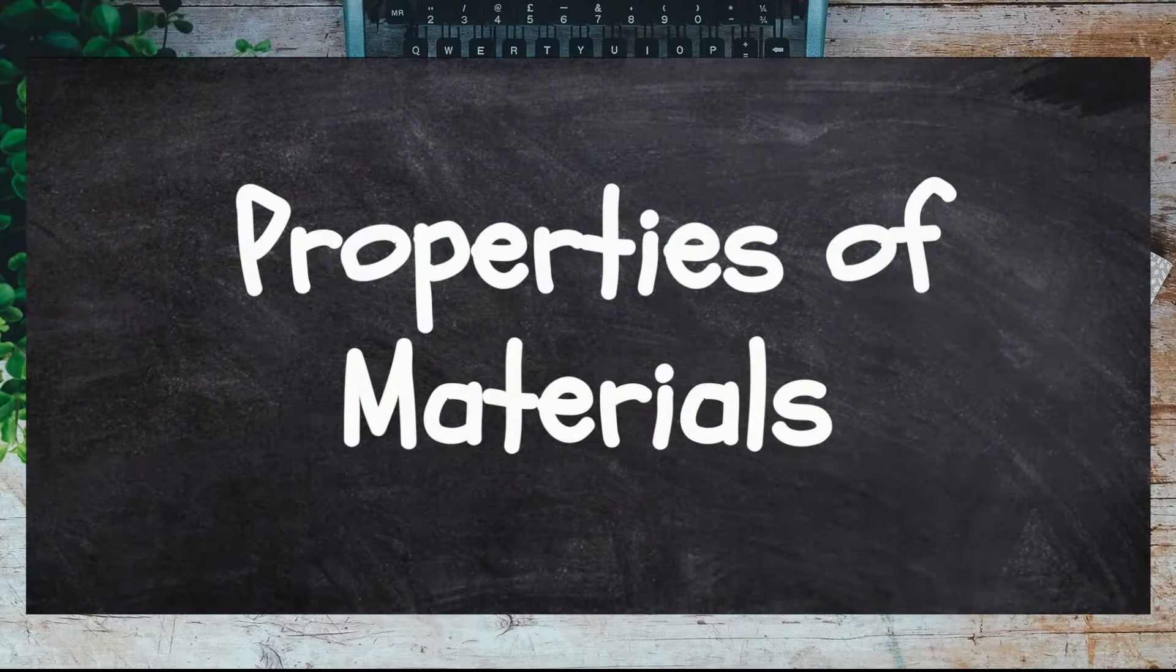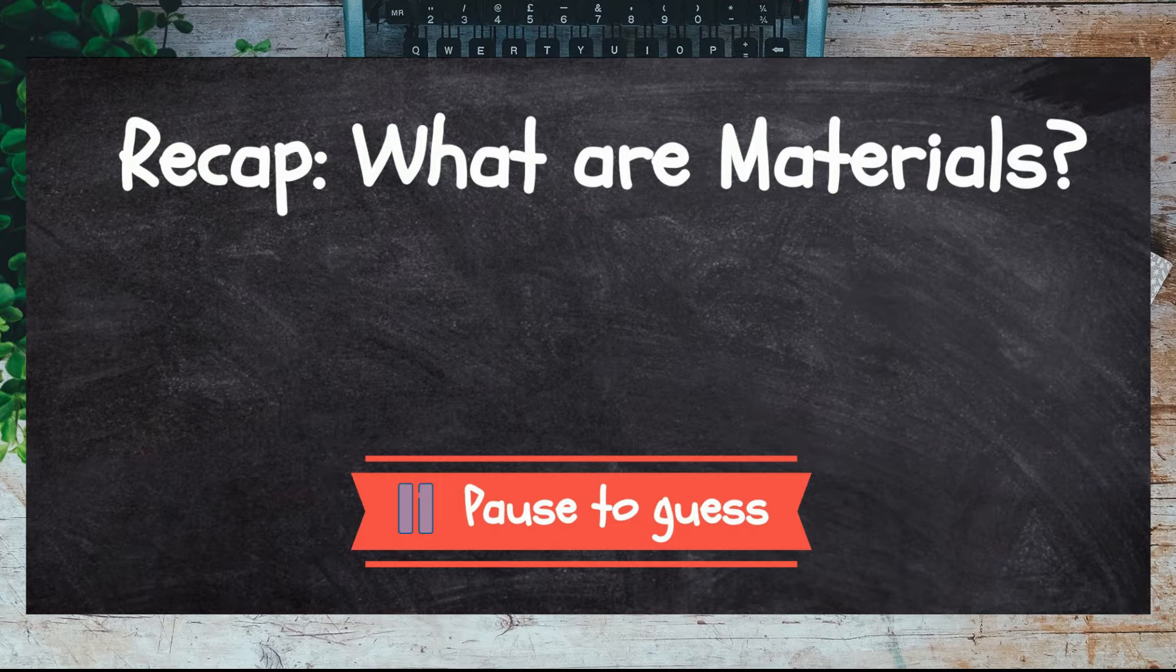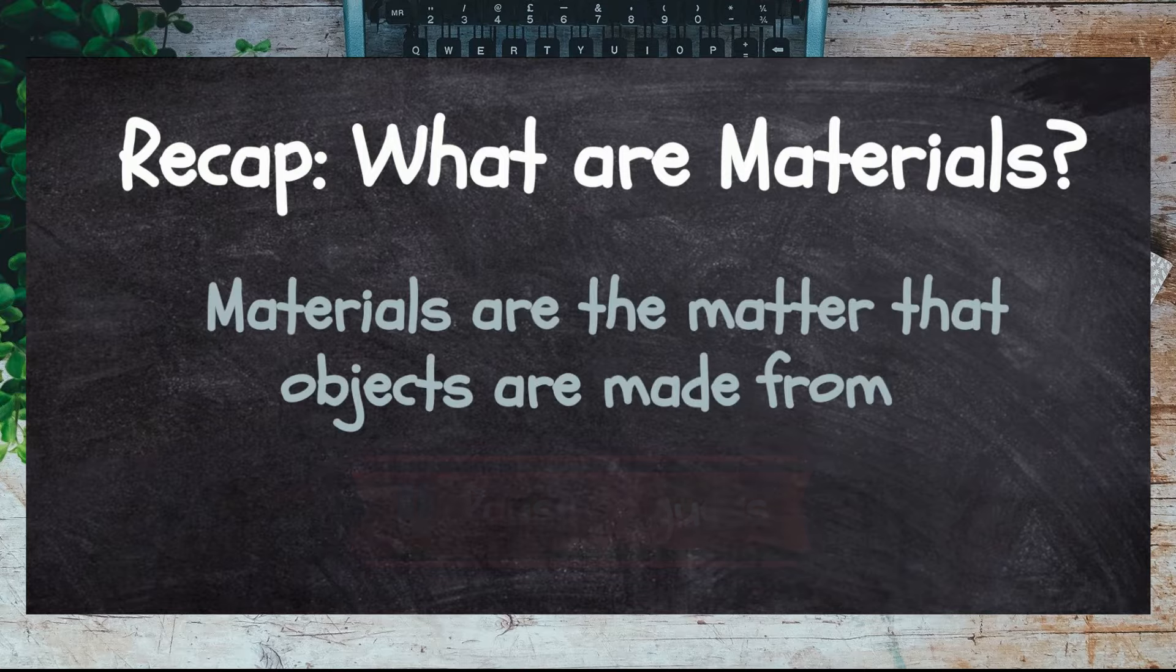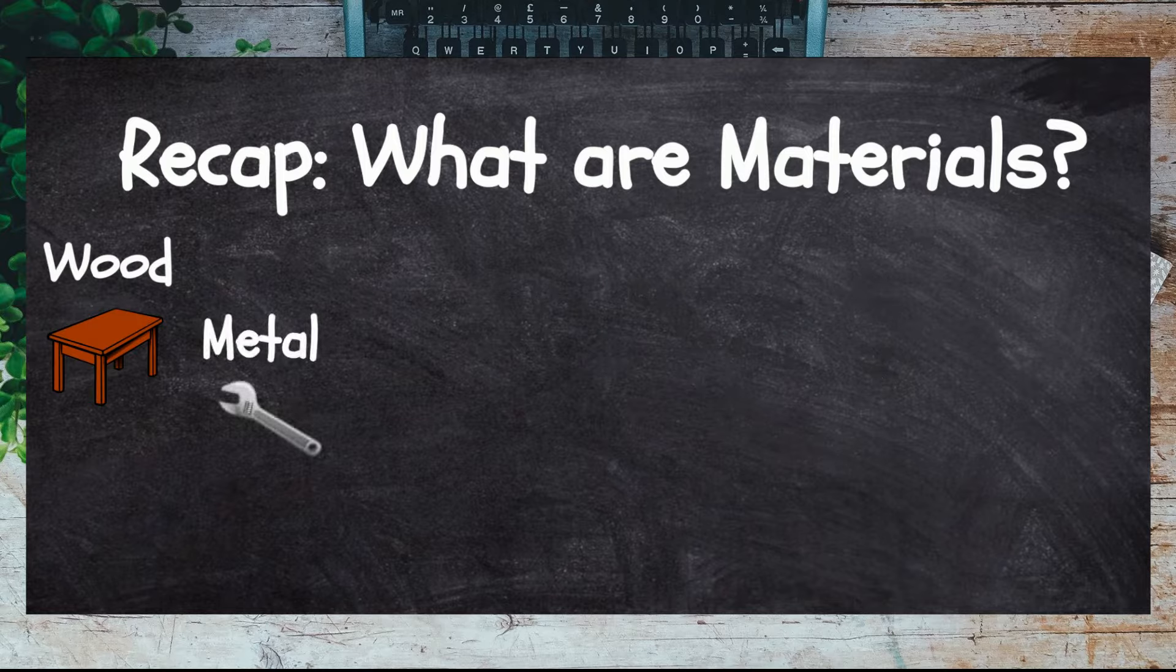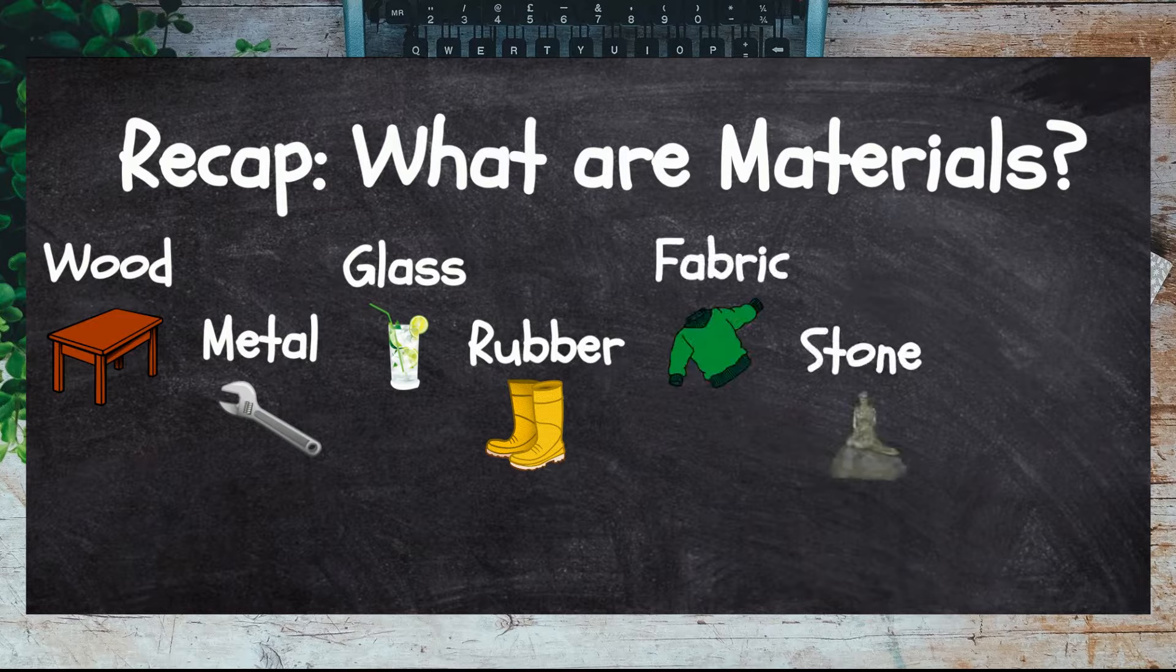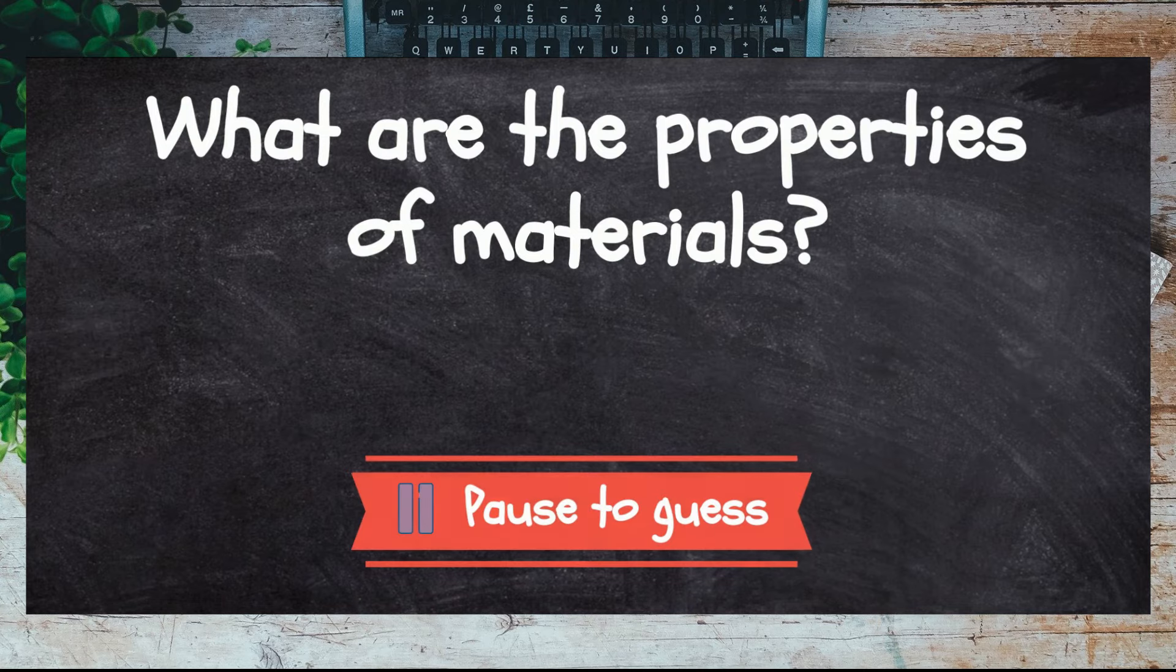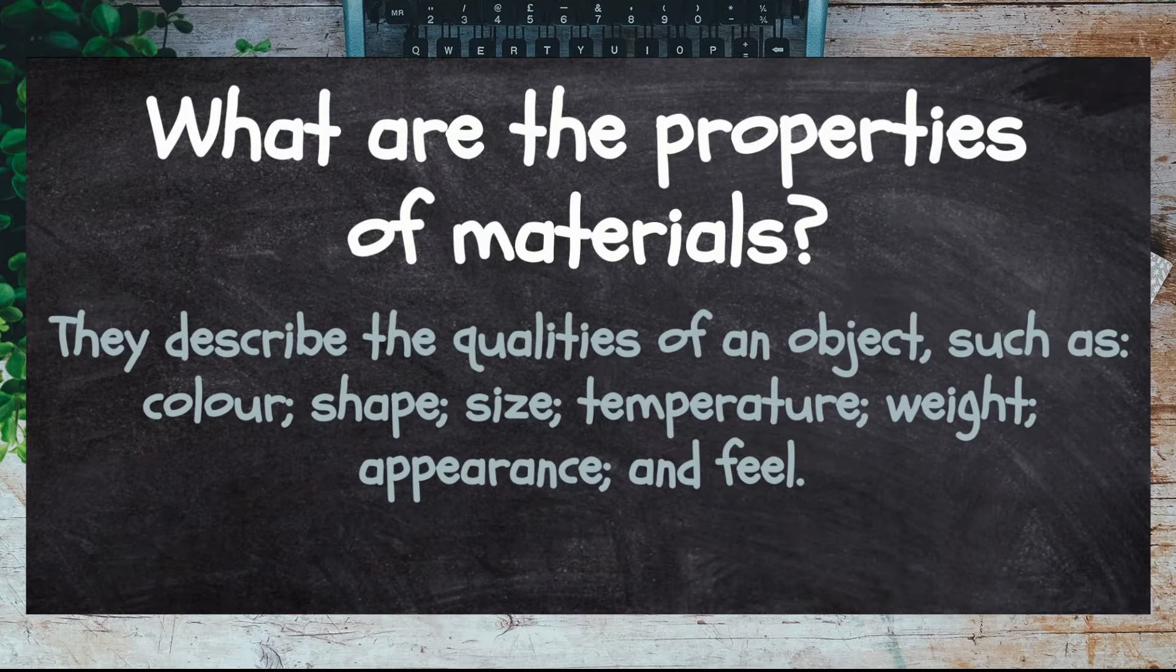Properties of materials. Let's recap: what are materials? Materials are the matter that objects are made from, such as wood, metal, glass, rubber, fabric, stone, and plastic. So what are the properties of materials? The properties describe the qualities of materials.